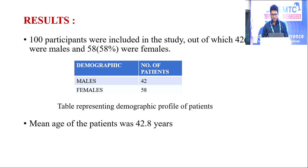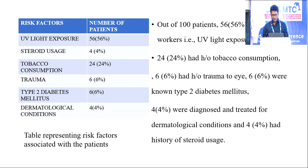A total of 100 participants were included in the study, out of which 58% were females and 42% were males, showing more female preponderance. Out of 100 patients, 56% were field workers, most commonly exposed to UV light. 24% had a history of tobacco consumption, including chewing.